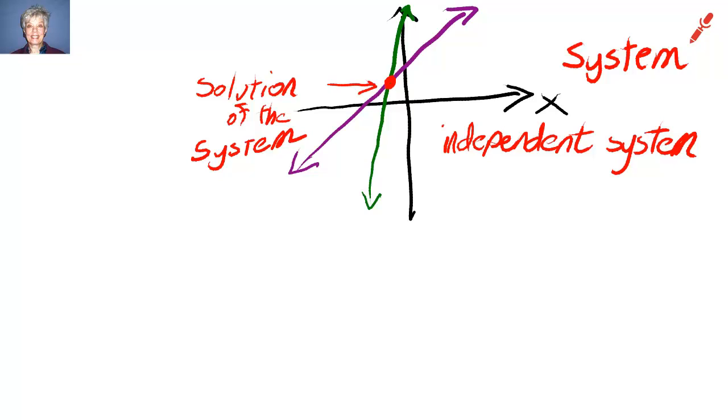They touch at one point that we call the solution. Because they touch, we call this a consistent system. When two lines touch, they make up a consistent system.